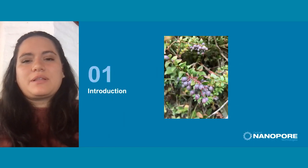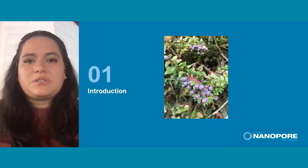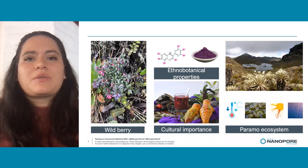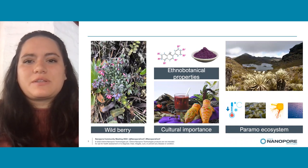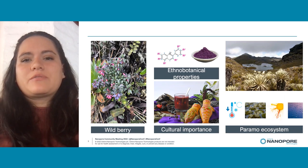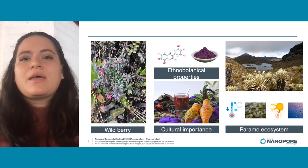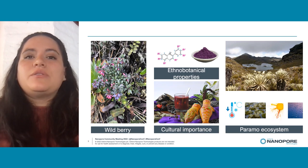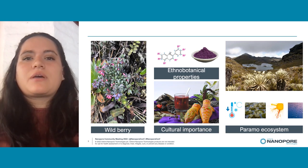To start with, I'm going to give a little bit of context of the species we are working with. Mortiño is a wild berry that grows in the Andean páramo from Venezuela to Peru. The páramo is an ecosystem which is really important for different countries as it is a crucial water supplier, characterized by low temperatures from 8 to 17 degrees Celsius, non-arboreal vegetation, high UV radiation, and high humidity.